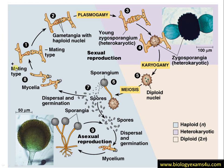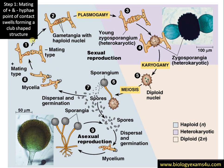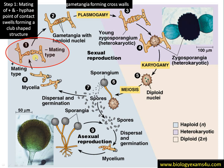In the case of Rhizopus there are two mating types, designated as plus mating type and minus mating type. Step one: mating of plus and minus hyphae. The point of contact swells and bulges out forming a club-shaped structure. Many nuclei along with protoplasm move to the side. Step two: formation of two gametangia by forming a cross wall.